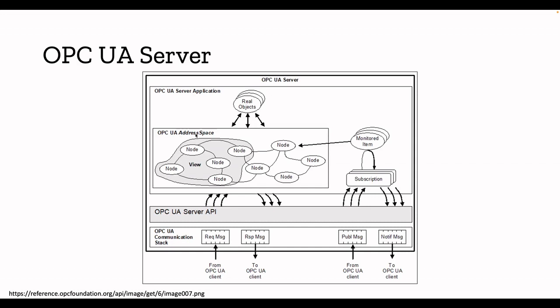The OPC UA address space is used to represent objects to the clients. Address space contains nodes — it contains the definitions and references to each other; you can see all those nodes are linked. Address space also contains variables and methods. Variables can be your temperature data, pressure data, or any data which changes. Methods can be events, alerts, or any thresholds you set. Basically, address space contains these two things: methods and variables.